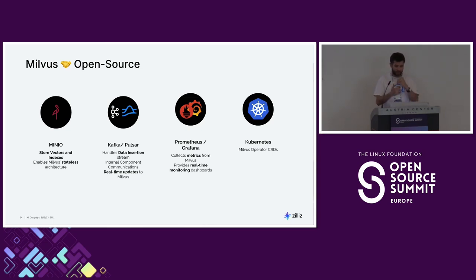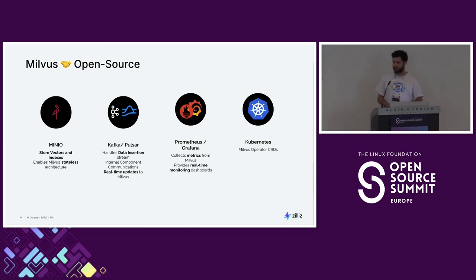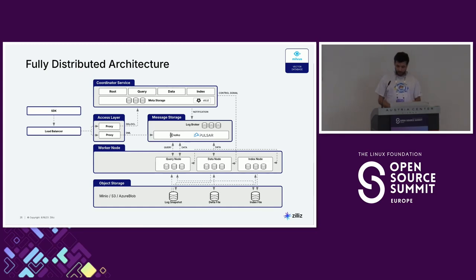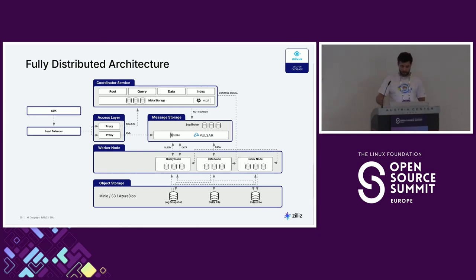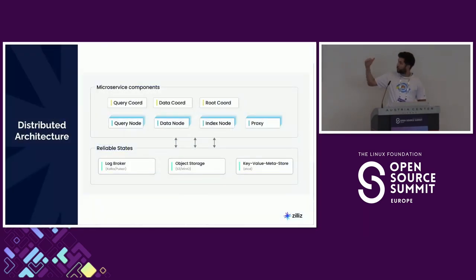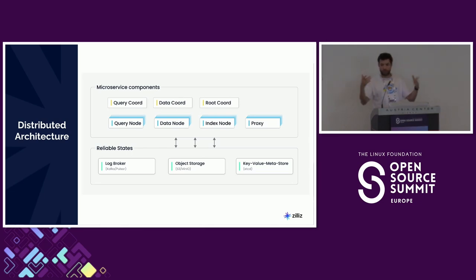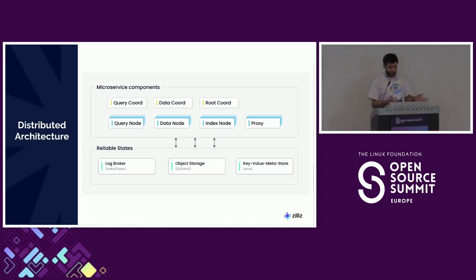We push everything to Prometheus and Grafana for real-time monitoring. We also have different CRDs for Kubernetes. The worker nodes just get data from Kafka or Pulsar from the log broker, and store those directly into S3 or anything similar to S3. All query coordinators talk to the query nodes, data coordinators to data nodes. All worker nodes are just pods, so you can scale them up and down. They read directly from the log broker and store everything into S3. We use etcd for metadata storage.